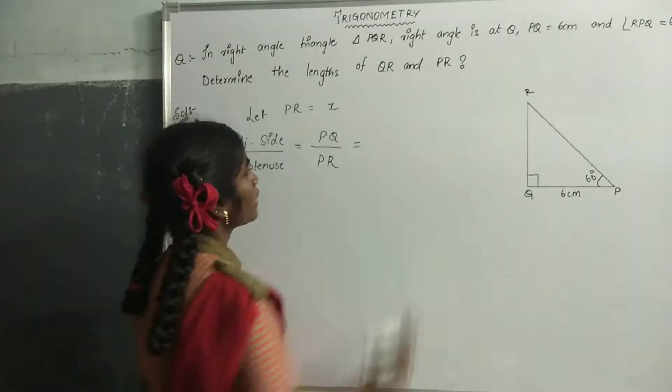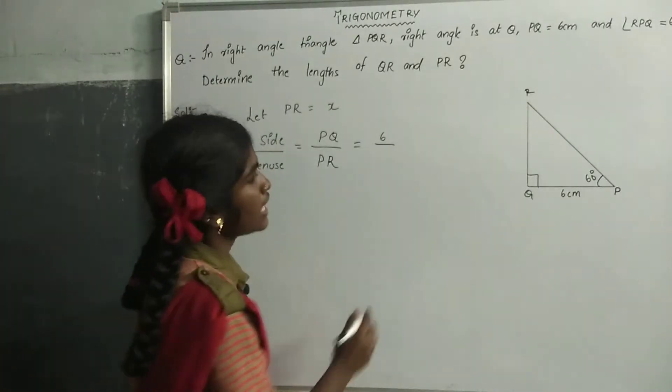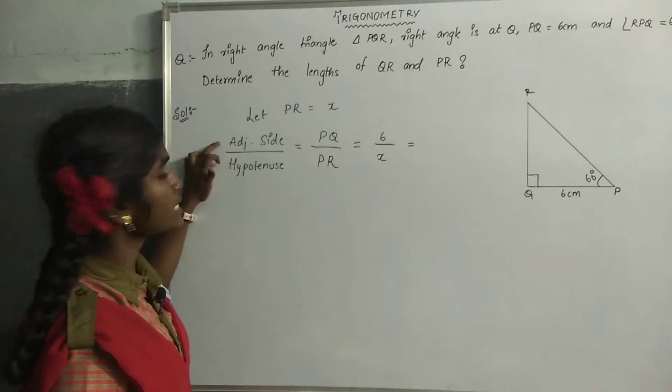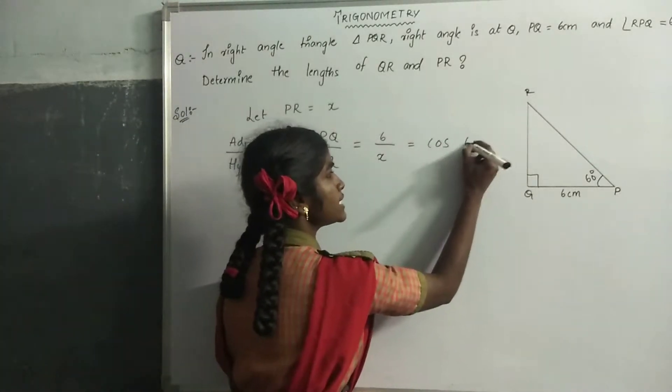Replace the value of PQ as 6 cm and PR as X. We know that adjacent side by hypotenuse equals cos 60 degrees.